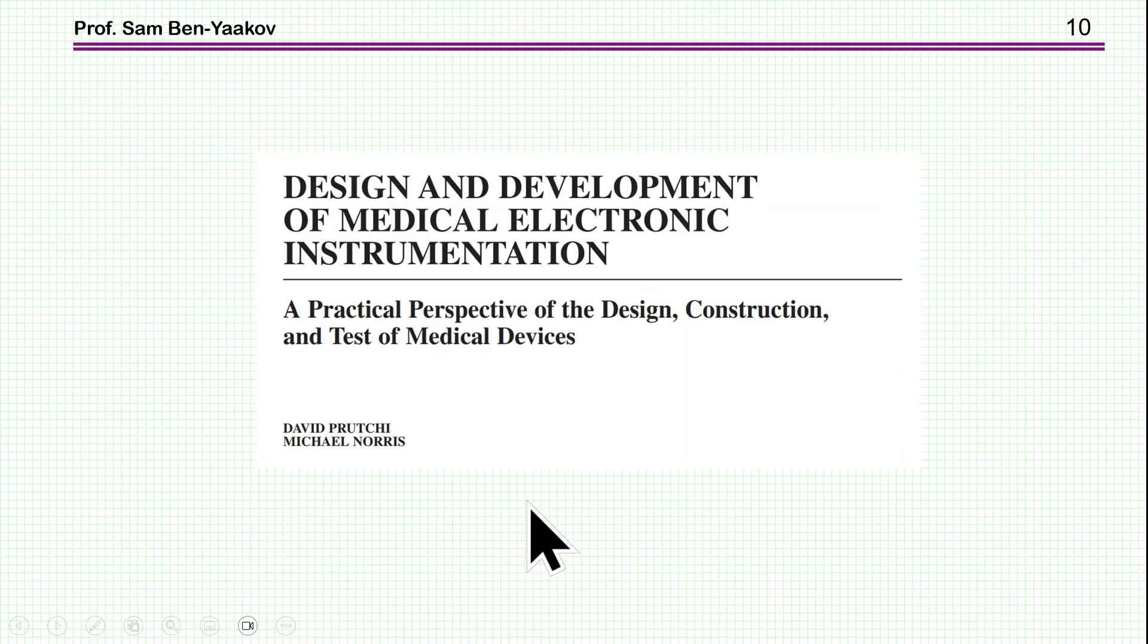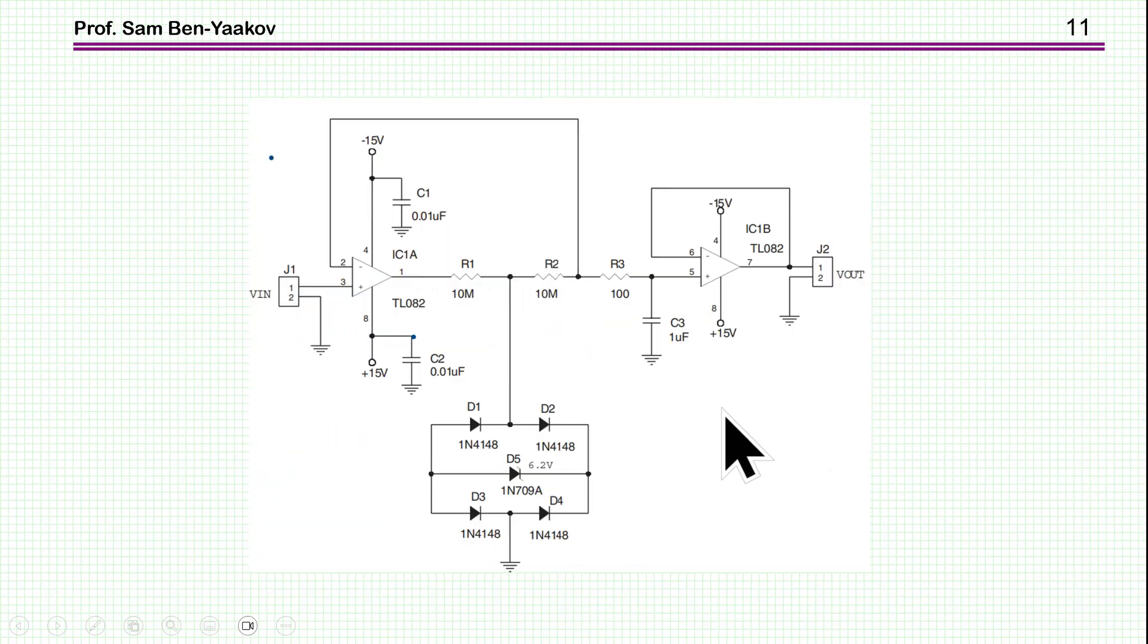Now the values that I have taken for the circuit are from this book, and this is the design and development of medical electronics instrumentation. And here you see the circuit. This is exactly the circuit that I've put on LTSpice, the two amplifiers. These are the values, the exact values that I have here, also the same amplifier. So this is the circuit for actually filtering out spikes, while the bandwidth, useful bandwidth, due to the slew rate, is very narrow.